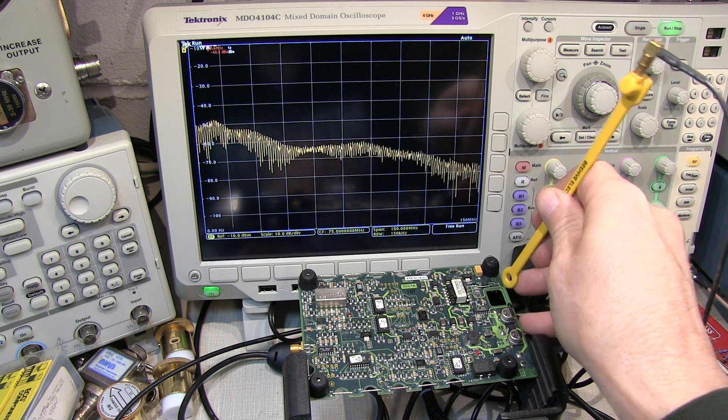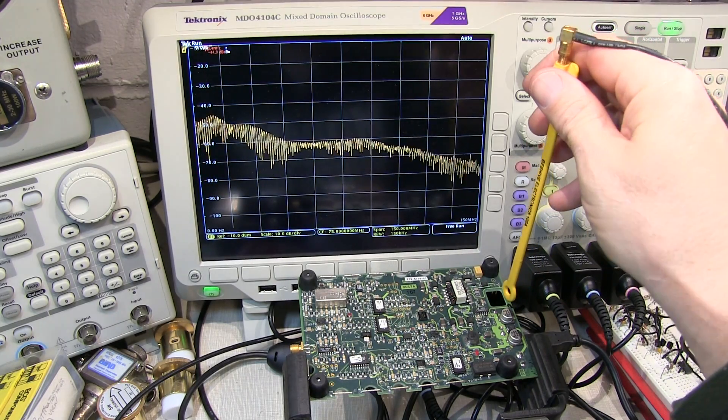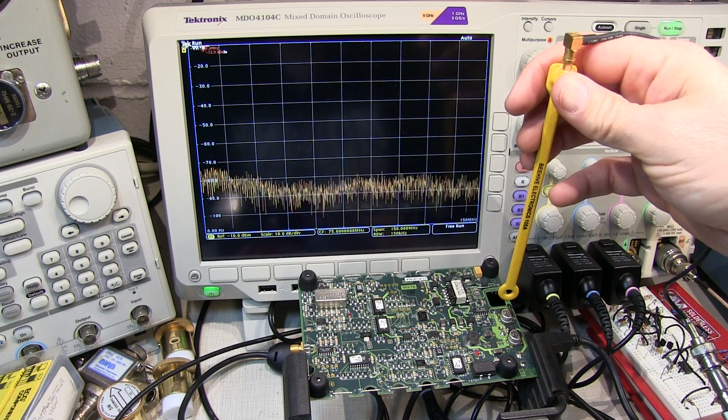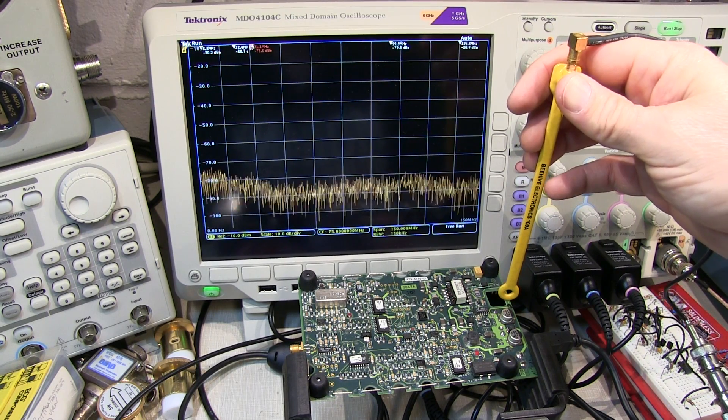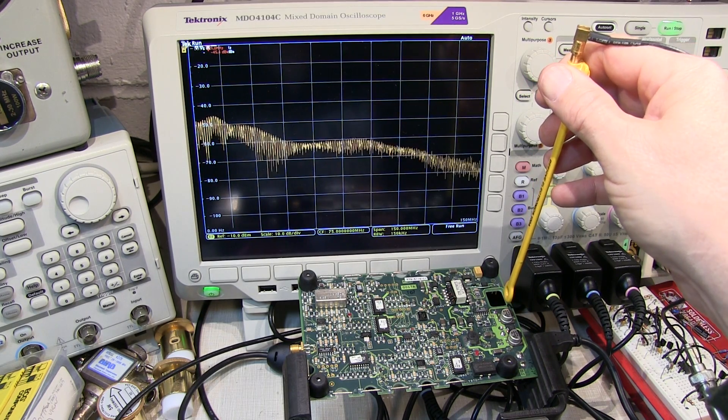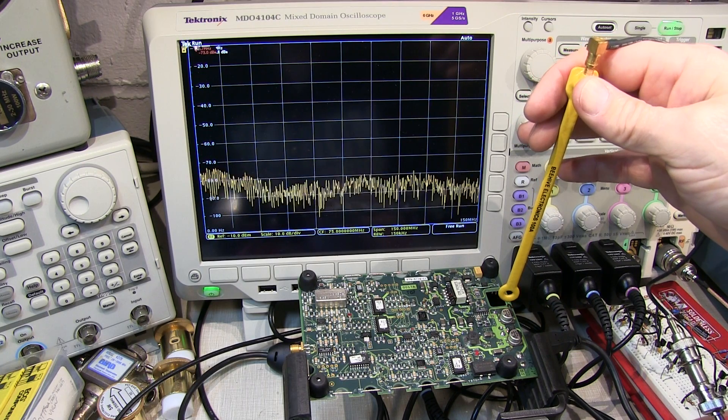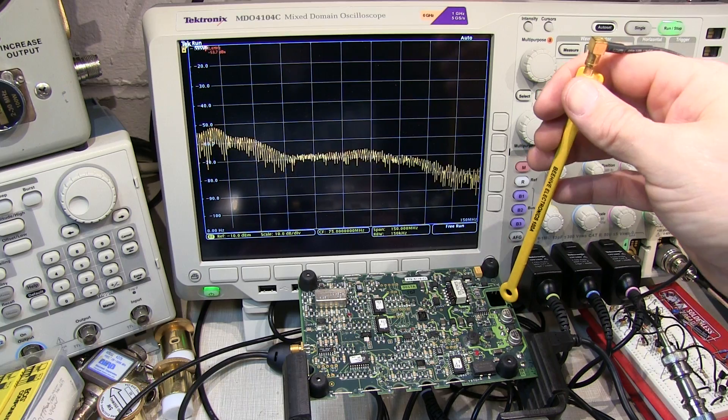But if I now rotate this probe 90 degrees with respect to that current flow, we can actually see I can make that signal completely disappear. I'm still sitting right on top of that same trace, but by simply rotating the probe 90 degrees, we can get a lot of sensitivity to that current or make it completely go away. Now this can be really handy when you go to search for an offending emission on a circuit board.